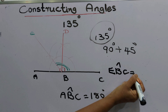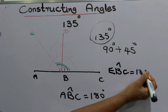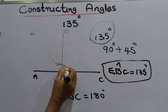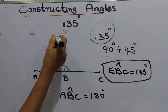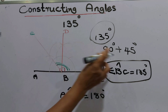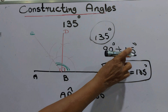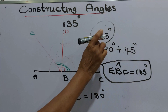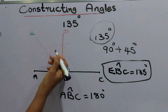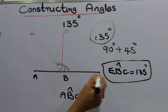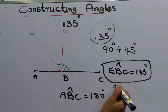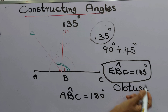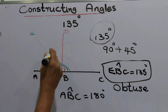The EBC angle is 135 degrees. That is 90 degrees, and the other 90 degrees angle — we bisected that angle and took half of it, which is 45 degrees. So 90 degrees plus 45 degrees makes 135 degrees. The EBC angle is an obtuse angle — it is more than 90 degrees.